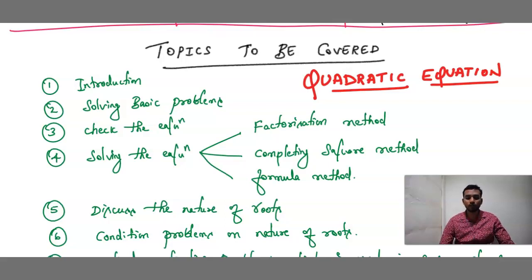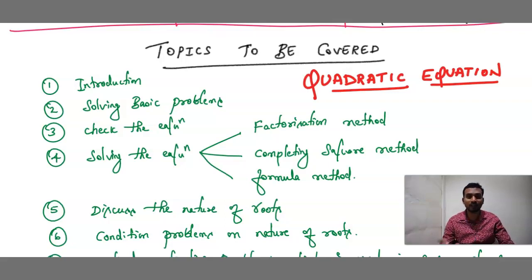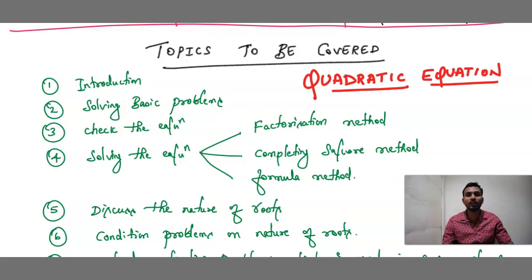In this Quadratic Equation chapter, I am going to cover the topics: introduction and the origination of Quadratic Equation, classification of Quadratic Equations, and solving some basic problems. Then we will check whether a given equation is a Quadratic Equation or not. Next, we will find the roots by using three methods: factorization method, completing the square method, and formula method.